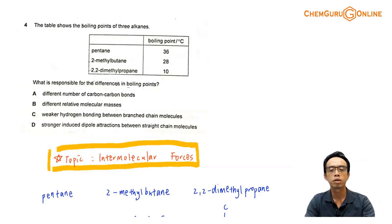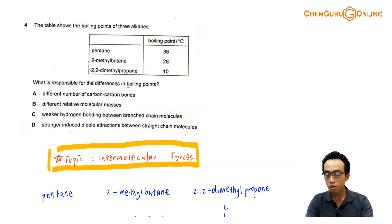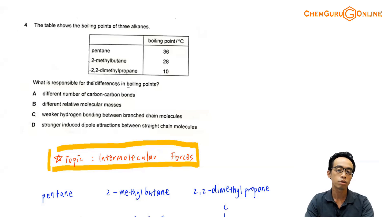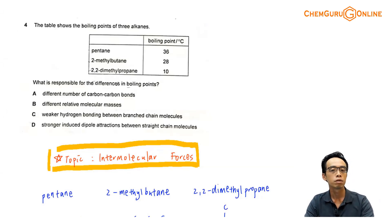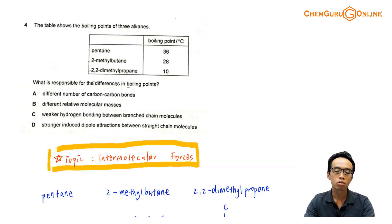Hi everyone, this is Maverick Paul, the chemistry guru. In this video, we want to discuss the suggested solution for 2020 A-levels H2 chemistry, paper 1, question 4.